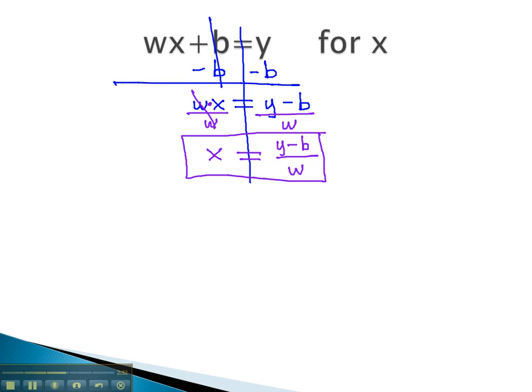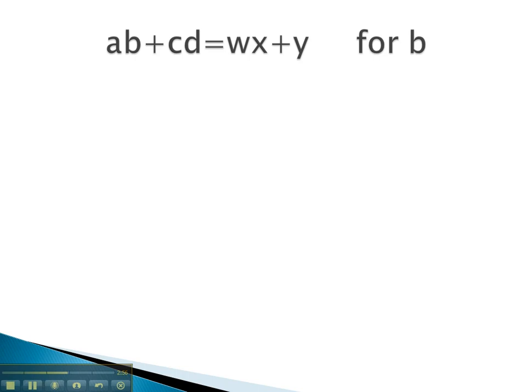Let's try another equation. In this next example, you notice that the variable we're solving for is b. Again, we will balance through the equals sign as we attempt to get the b alone. Focusing on this side of the equation, then, first we need to do the adding and subtracting.